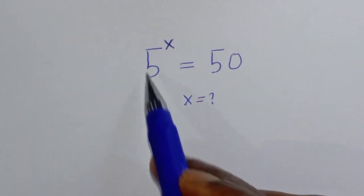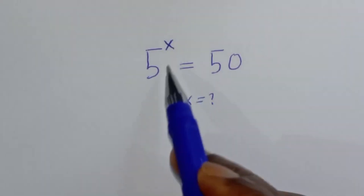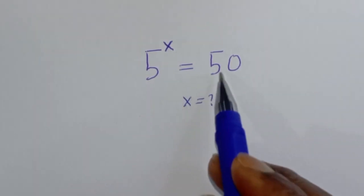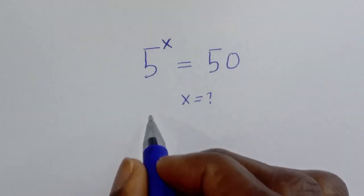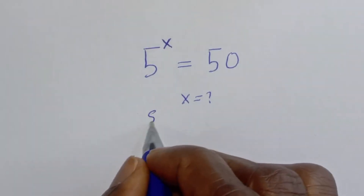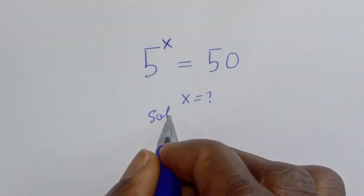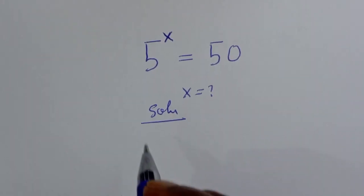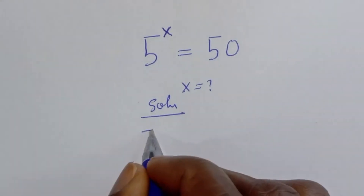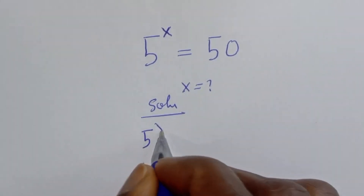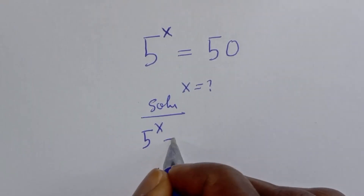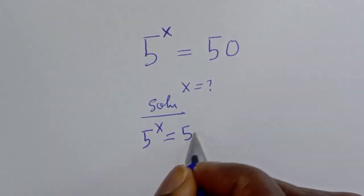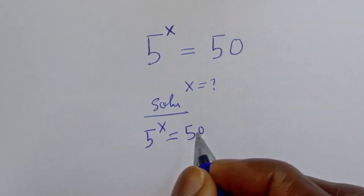Hello, how to solve for s from this given math problem? 5 raised to power s is equal to 50. Solution: 5 raised to power s is equal to 50.